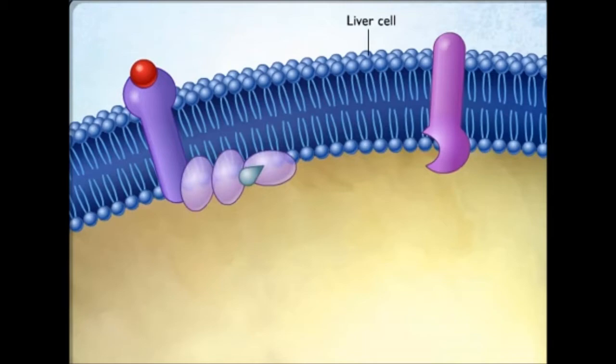Each G-protein is composed of three subunits and the binding of epinephrine to its receptor protein causes one of the G-protein subunits to dissociate from the other two.